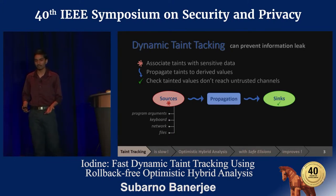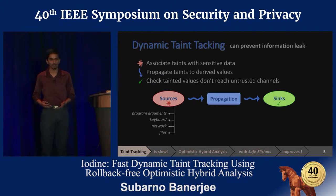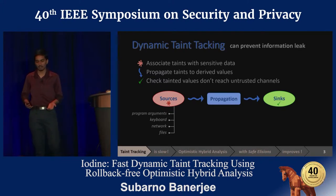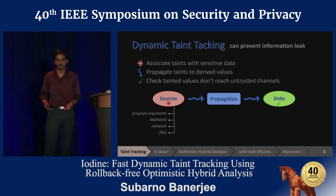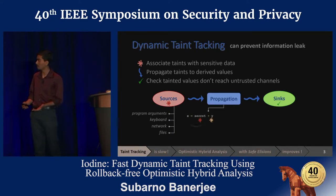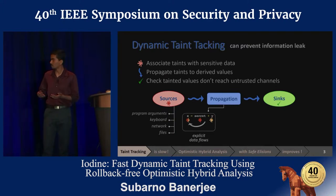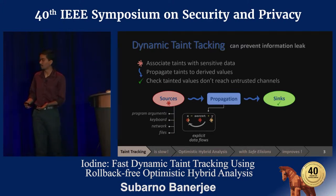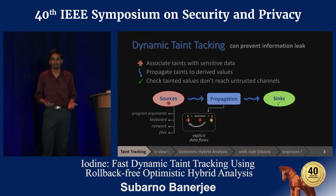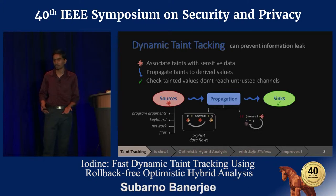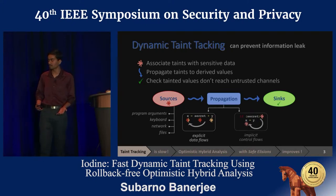The propagation policy defines how to compute taints for values that are derived from sensitive data. Typically, taints propagate explicitly via operations that are data dependent on tainted data. For example, x equals secret plus y — here x will be tainted by secret and y. But taints can also propagate implicitly, for example, via control flow dependence, where operations are control dependent on the tainted secret.